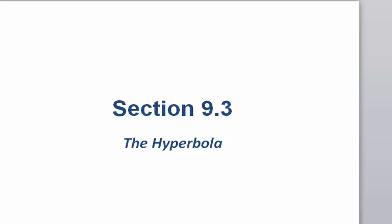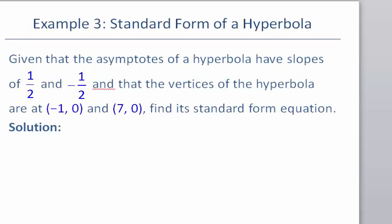We'll now conclude section 9.3 by discussing two additional examples for the hyperbola. We begin with an example that reads: given that the asymptotes of a hyperbola have slopes of 1/2 and negative 1/2, and that the vertices of the hyperbola are at negative 1, 0 and 7, 0, find its standard form equation.